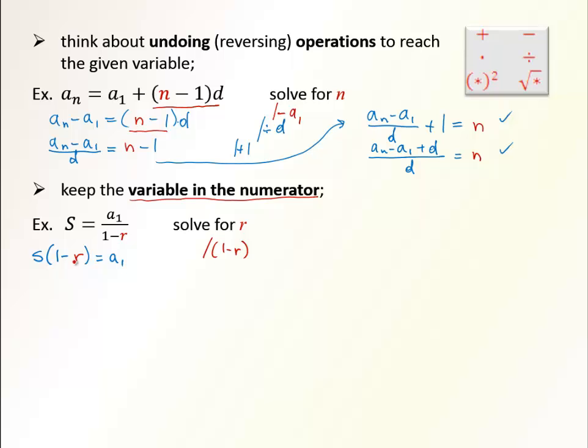Now I want to be closer to r. So what I want to do is get rid of this S first. So let's divide by S. I end up with 1 minus r equals a₁/S. Finally, I want to keep r by itself with a positive sign. So the best idea would be to move the r to the other side, and move a₁/S to the left side.